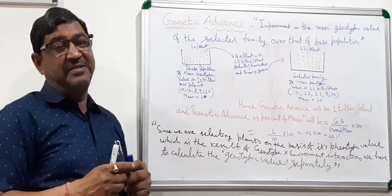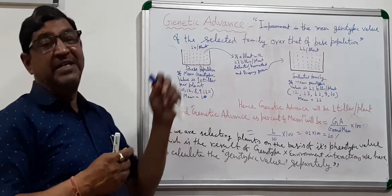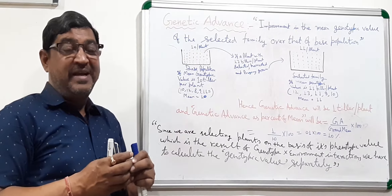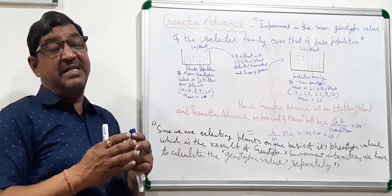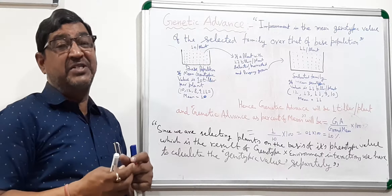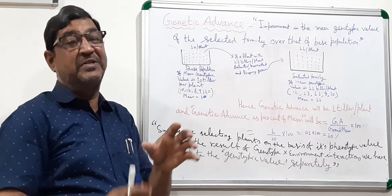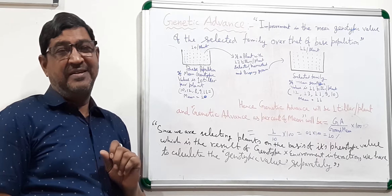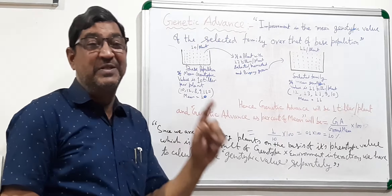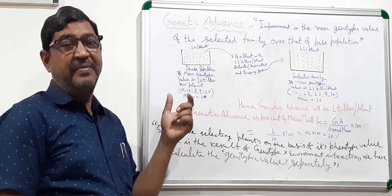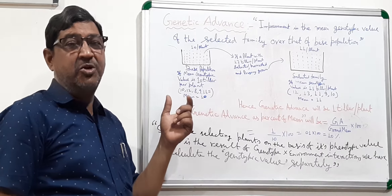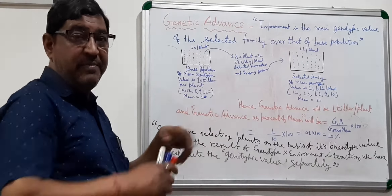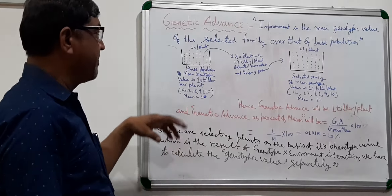How much improvement you have observed in the population grown from that plant — this is genetic advance. Of course you are looking at the phenotype, and you know that phenotype is the result of genotype-environment interaction. So directly, if you are seeing the plant which is having 12 number of tillers, that doesn't mean its genotypic value is 12. But hypothetically I'm putting the genotypic value here just to explain it well.